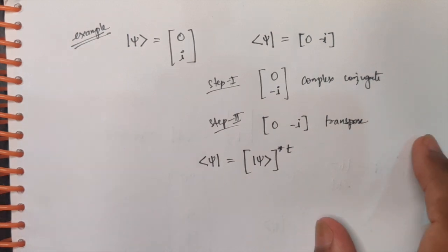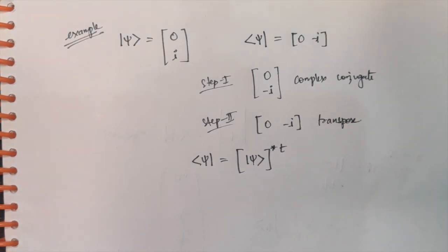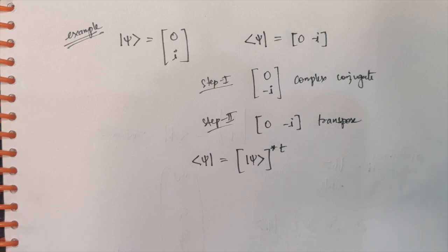I hope by now you have understood Dirac Notations — what ket and bra vectors are. If in further exams or further videos you see this ket and bra notation, you will be able to understand it and solve questions related to that. In my further videos, where I'll be taking more questions on eigenvalues, eigenfunctions, and different types of GATE and CSIR-NET questions, I'll be using this Dirac notation to explain you as well. That's all for this video, guys. Thank you so much for watching. If you have any doubt, ask in the comment sections below. Have a great day, bye bye.